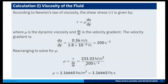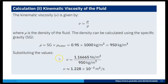Now we have to find the kinematic viscosity ν = μ / ρ, where ρ is the density of the fluid. The density can be calculated using the specific gravity: ρ = SG × ρ_water = 0.95 × 1000 = 950 kg/m³. Substituting the values: ν = 1.1665 / 950 = 1.228 × 10⁻³ m² per second.